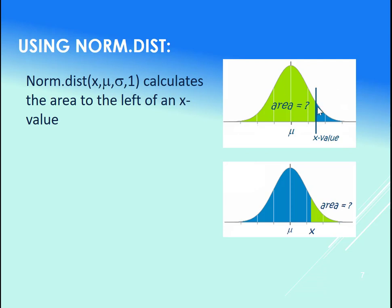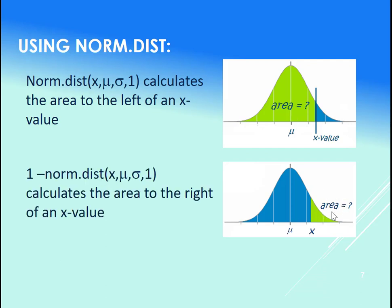We use norm.dist to calculate the area to the left of an x value. So this green area here—norm.dist returns the area to the left. If we need the area to the right, what do we do? We use one minus norm.dist.